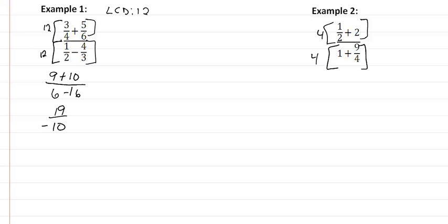So we have 4 divided by 2, which would be 2, and 2 times 1 is 2, plus 4 times 2 is 8.